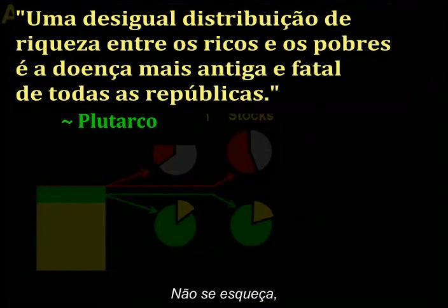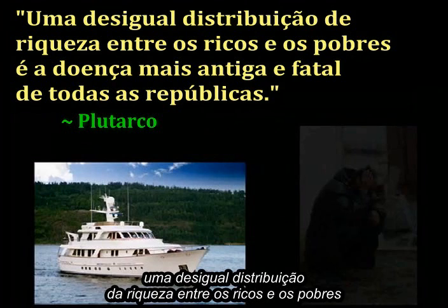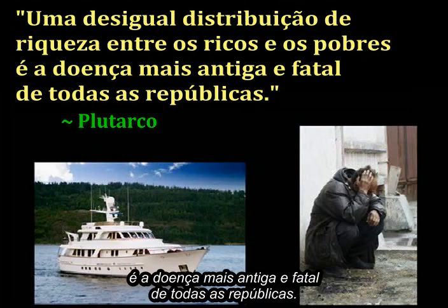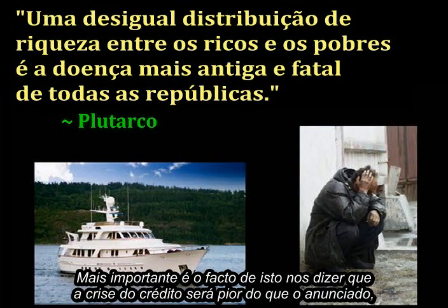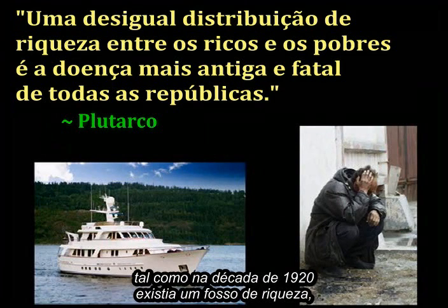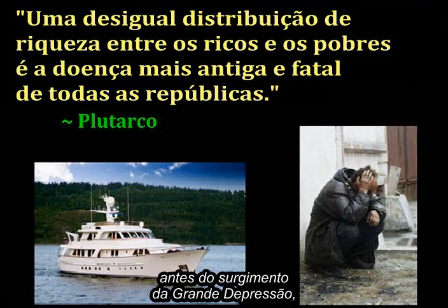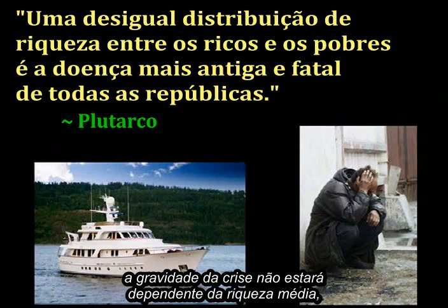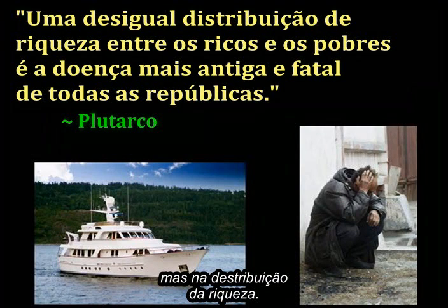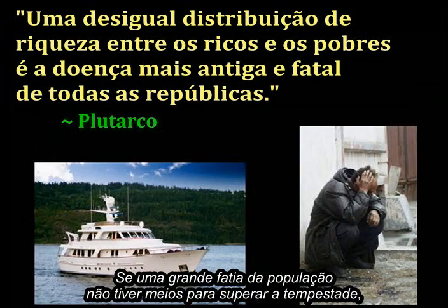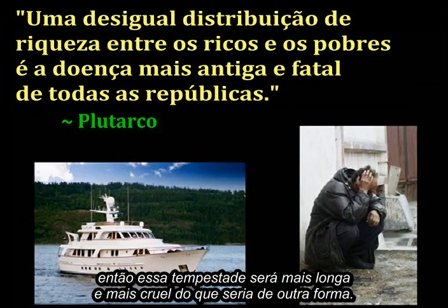An imbalance between rich and poor is the oldest and most fatal ailment of all republics. This tells us that our credit crisis is going to be worse than advertised. Just as was true of the wealth gap in the late 1920s before the onset of the Great Depression, the severity of the crisis will not depend on average wealth, but on the distribution of wealth. If a large swath of the population lacks the means to weather the storm, then that storm will be longer and harsher than otherwise would be the case.